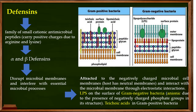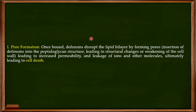To summarize: gram negative bacteria have LPS giving a negative charge to their membranes, while gram positive bacteria carry teichoic acids giving a negative charge to their membranes. When defensins interact with these membranes, they disrupt the lipid bilayer by forming pores in the bacterial cell wall.